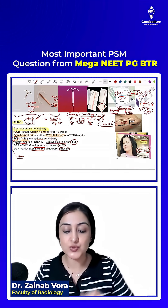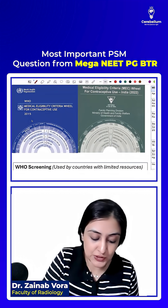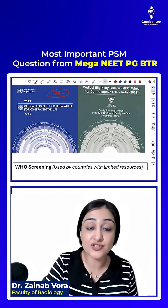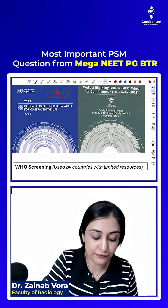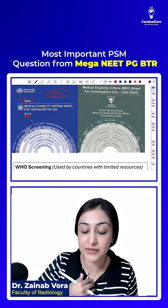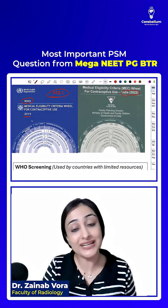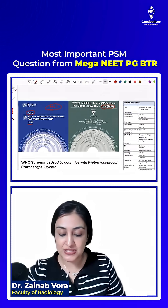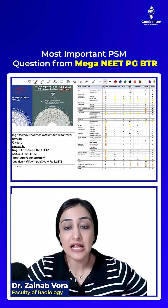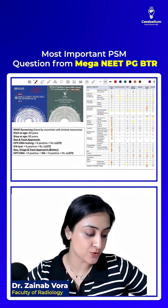This will become clearer once you see this. I expect one question from this. This is what is called MEC — Medical Eligibility Criteria. This was first given by WHO in 2015, and then we have our local version, Nikaala, in green color in 2022. If you see this, this is such a nice table which kind of clarifies all indications and contraindications for you.